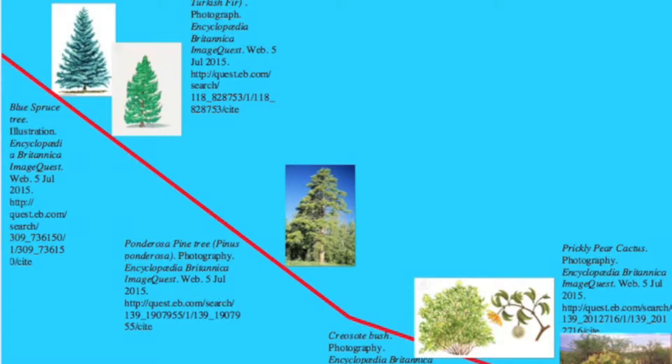Now let's take a look at some of the changes in the plant communities as we moved along this environmental gradient. With the change in altitude, there were changes in temperature and precipitation. At the very top of Sandia Peaks we find spruce trees and fir trees; towards the middle we find ponderosa pines; and as we approach the Sonoran Desert we find creosote bushes and prickly pear cactus.